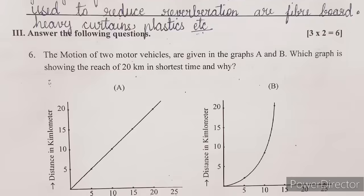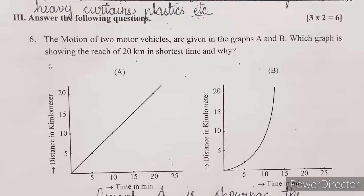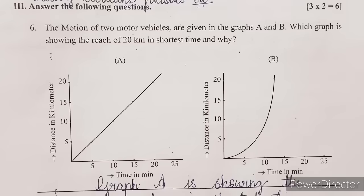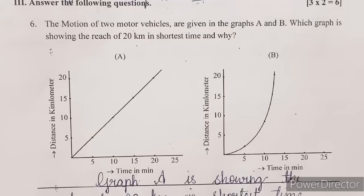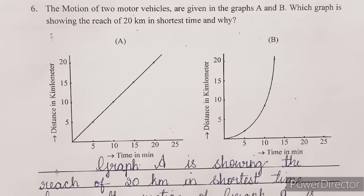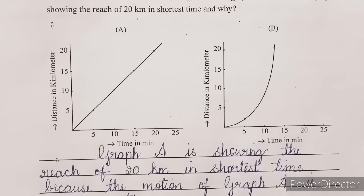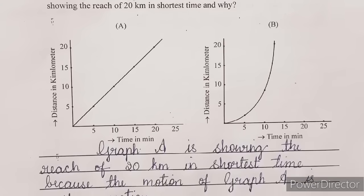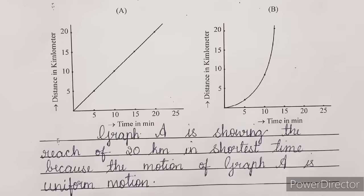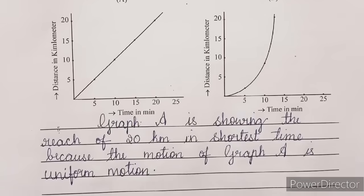Next question: answer the following questions, each carrying two marks — three questions, total six marks for this main. The motion of two motor vehicles are given in graph A and B. Which graph is showing the reach of 20 km in shortest time and why? The answer is graph A, showing the reach of 20 km in shortest time because the motion of graph A is uniform motion.